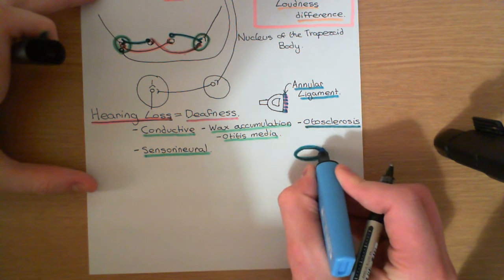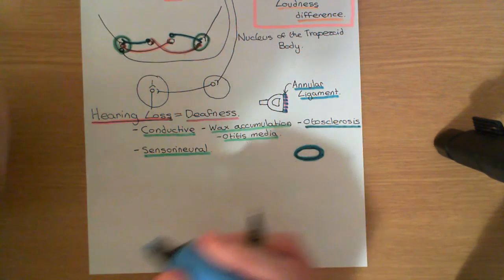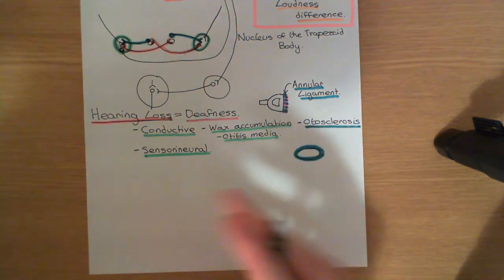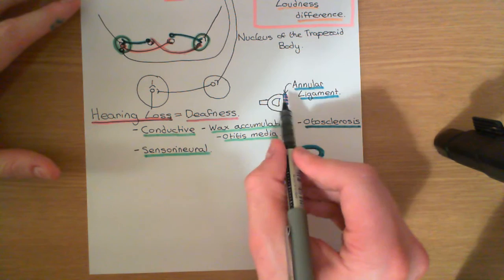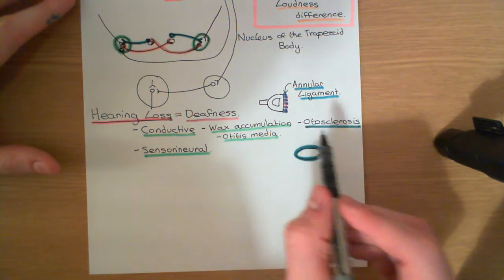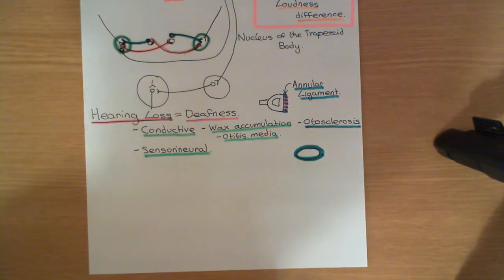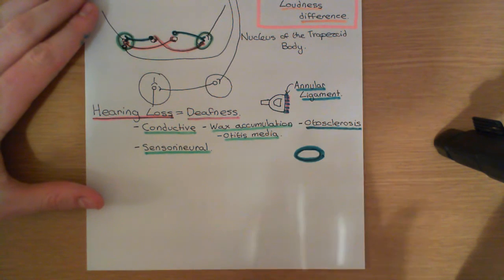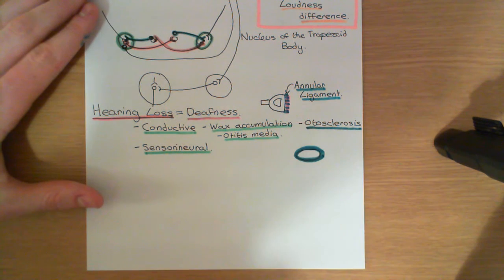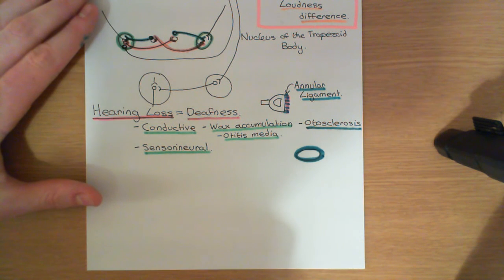In otosclerosis, this annular ligament becomes hard, which actually prevents the stapes moving in and out of the oval window because it is no longer flexible. That leads to a conductive hearing loss because oscillations in the tympanic membrane can no longer be conducted into oscillations within the cochlea — the stapes is no longer oscillating in and out of the oval window as it should. Those are the three major examples of conductive hearing loss.